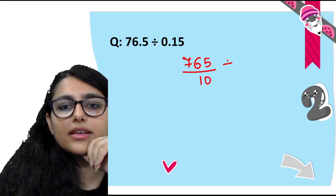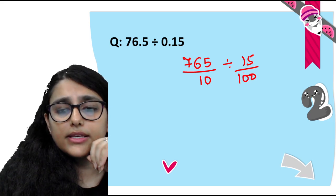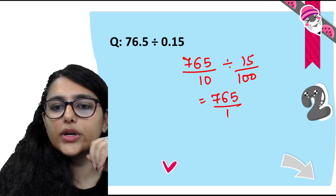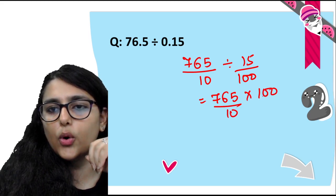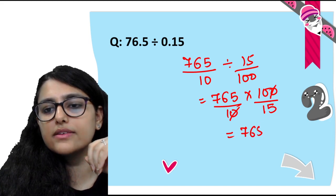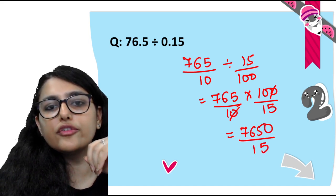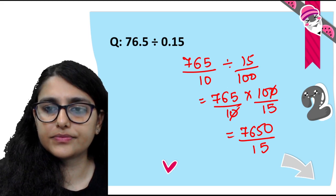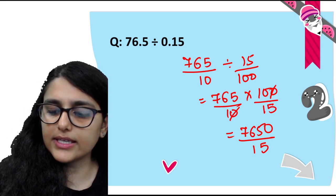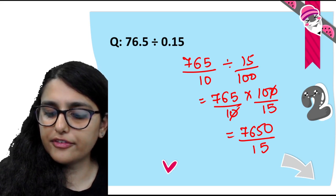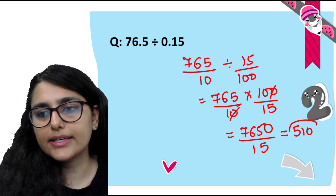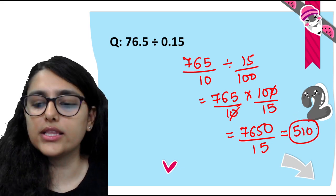Next: 7.65 ÷ 0.15. Using the fraction method: 765/100 ÷ 15/100. Reciprocal: 765/100 × 100/15 = 765/15. So this becomes 7650 ÷ 15, which equals 510. So the answer is 510.